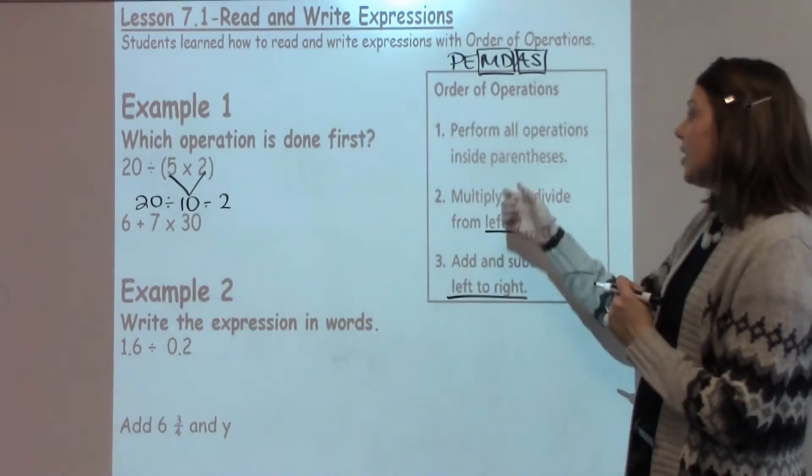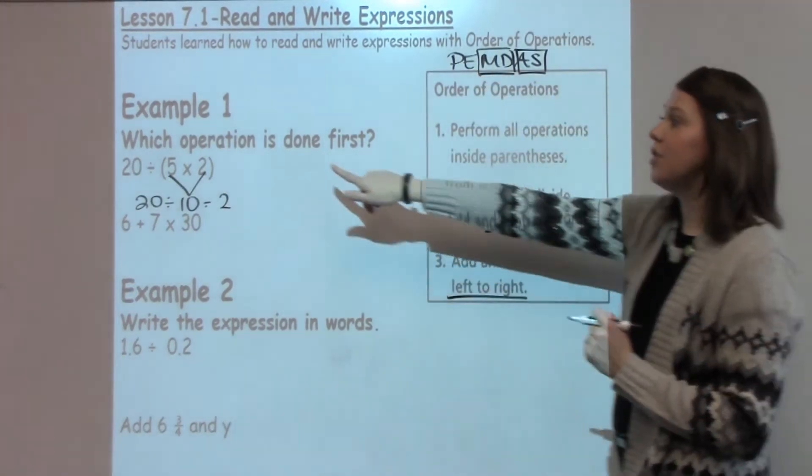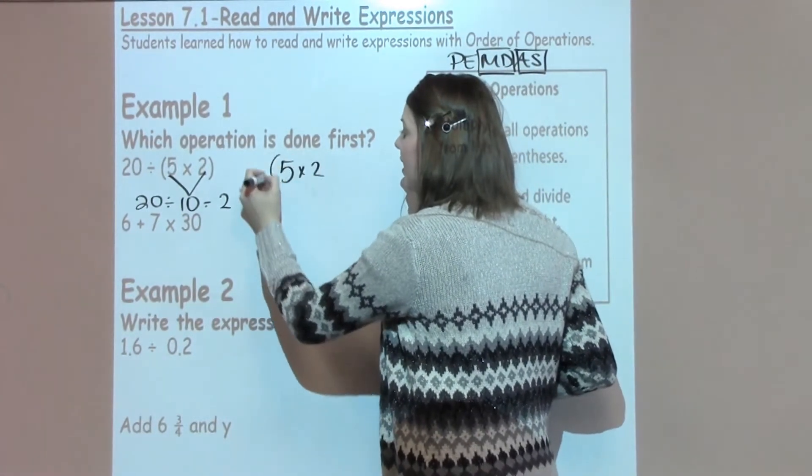With order of operations, what I did first was I did the parentheses because according to order of operations, that's what I should do first. So the operation that I would do first is I would write down 5 times 2.